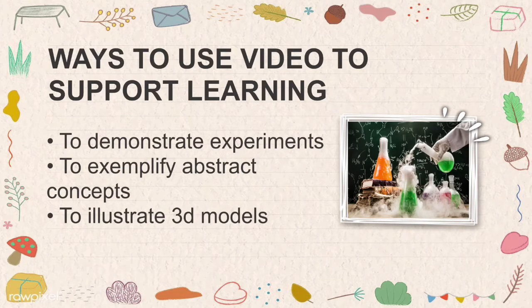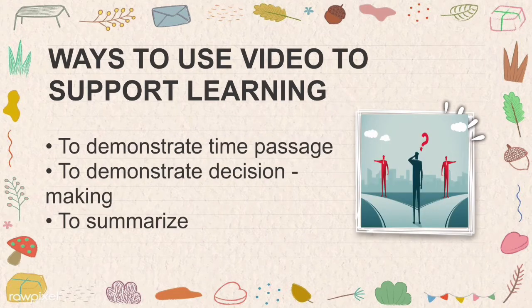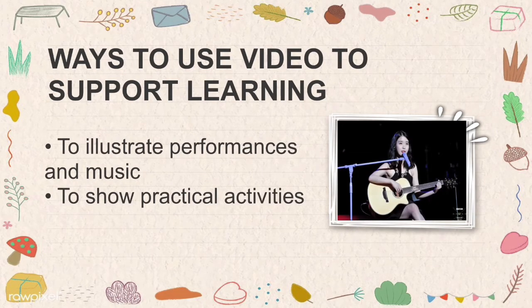Sixth is to demonstrate experiments — for example, sodium solution with the periodic table. Seventh is to exemplify abstract concepts — for example, what is inside a flame. Eighth is to illustrate 3D models. Ninth is to demonstrate time passage — for example, awesome HD slinky slow-motion. Tenth is to demonstrate decision making — for example, conflicts in the workplace: sources and solutions. Eleventh is to summarize. Twelfth is to illustrate performances and music, and thirteenth is to show practical activities.